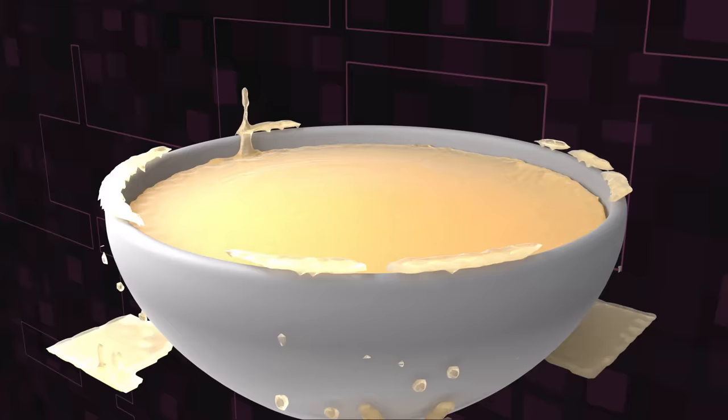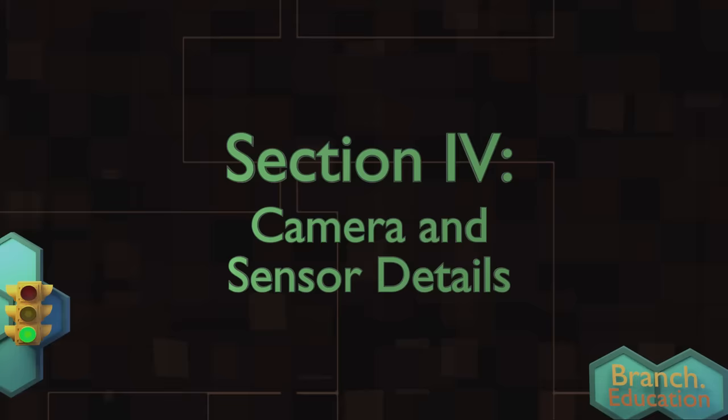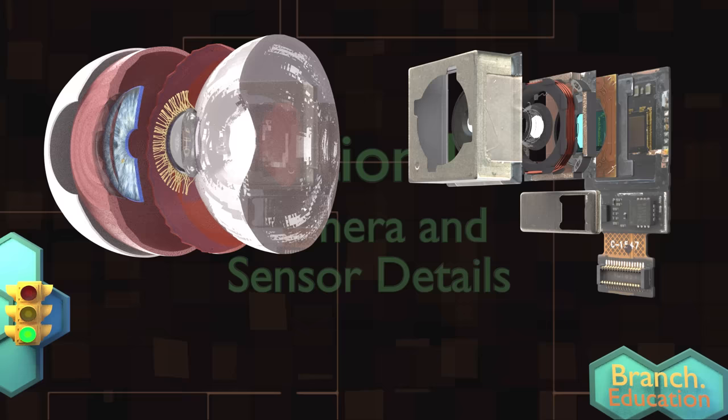So, if this episode is about how smartphones take pictures, why are we talking about the human eye? Well, it's because both of these systems share a lot of commonalities.